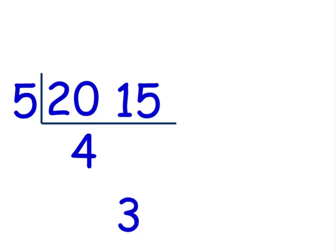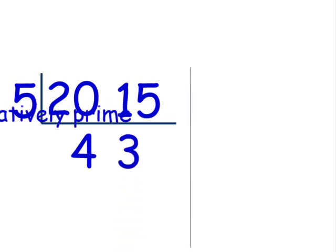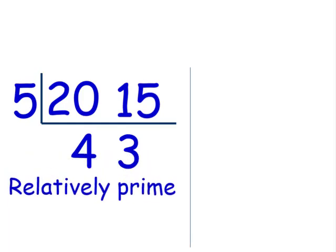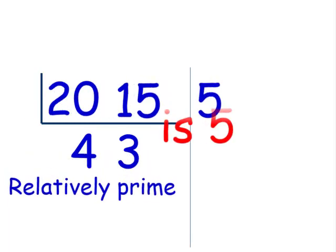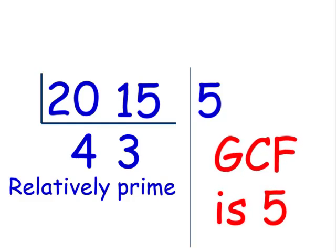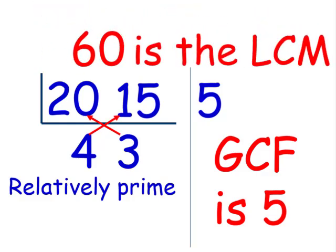Let's take a look at another example: 20 and 15. What number divides 20 and 15 evenly? If you said 5, you are correct. 20 divided by 5 is 4, and 15 divided by 5 is 3. 4 and 3 are relatively prime. Therefore, 5 is our greatest common factor. Our least common multiple is 3 times 20, or 4 times 15, which is 60. 60 is our least common multiple.